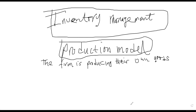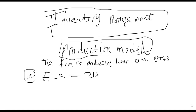We have what we call the Economic Load Size — that's formula number one. The formula is: the square root of (2DS / C) multiplied by (P / (P minus D)).